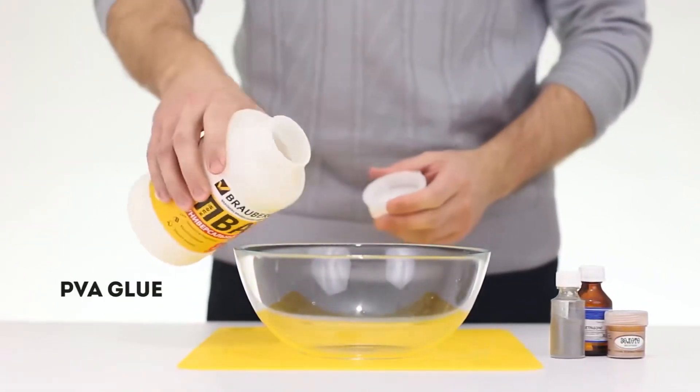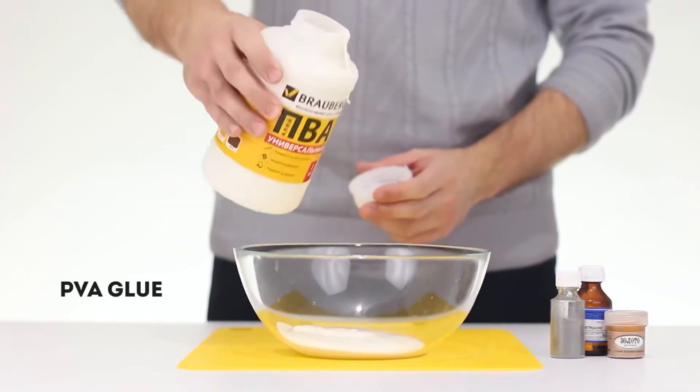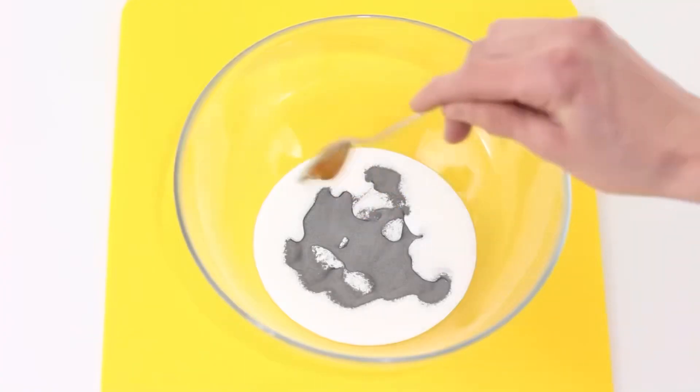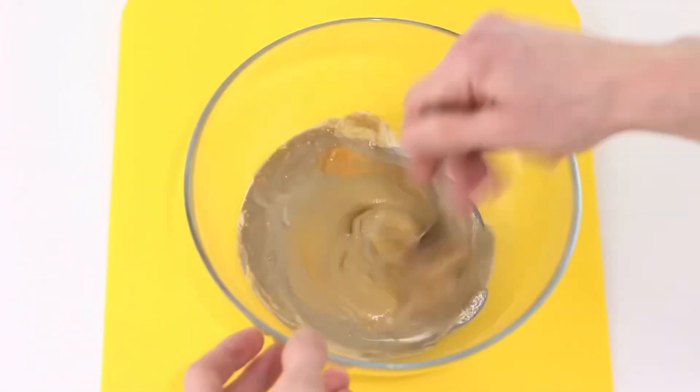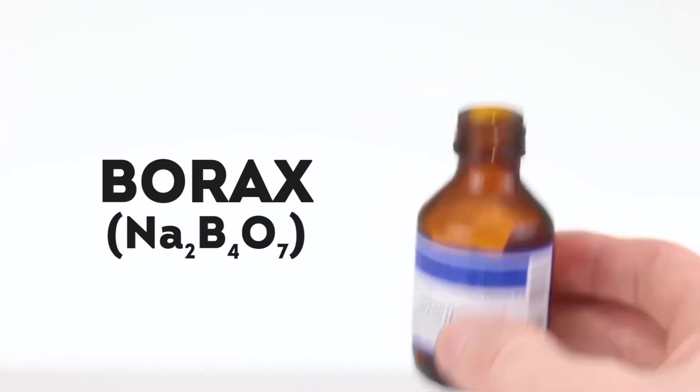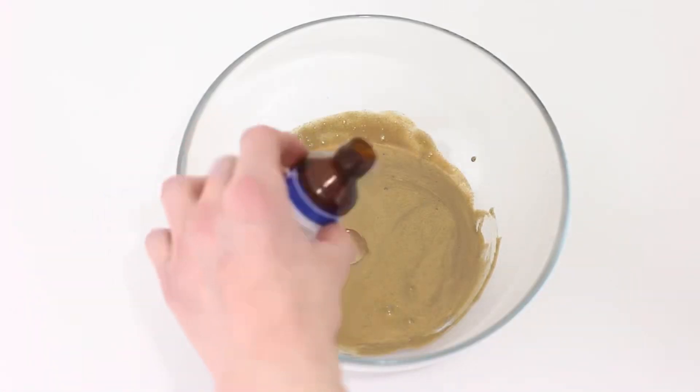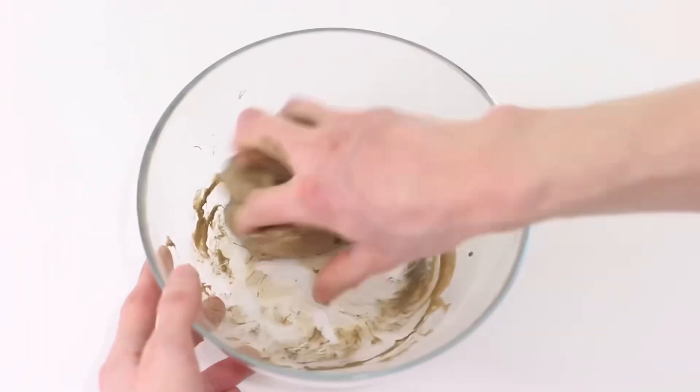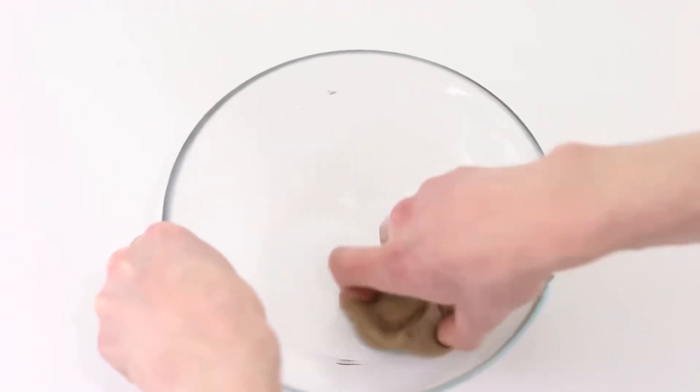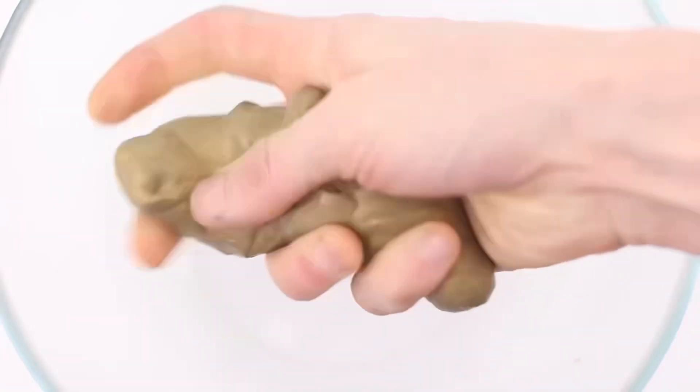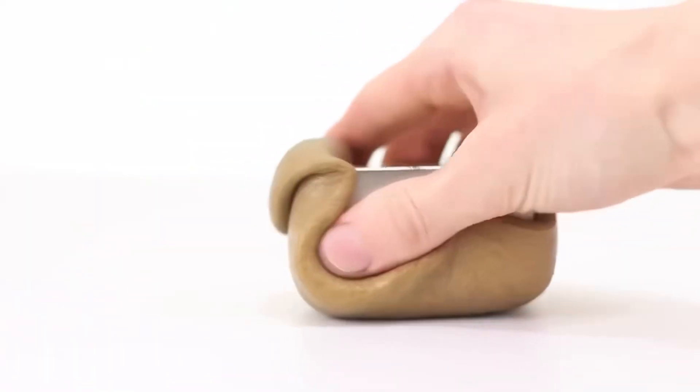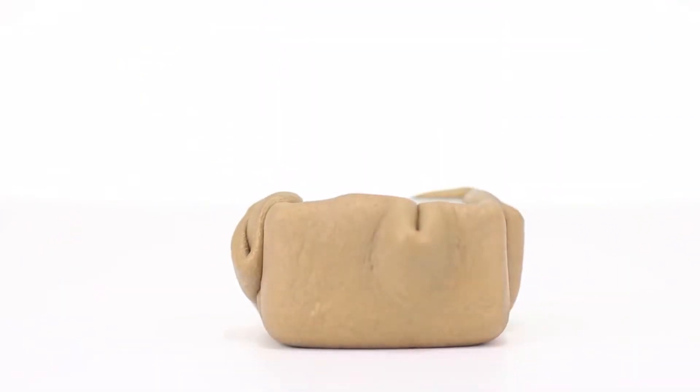Pour some PVA glue into a bowl. Add some steel spraying and bright gouache. Mix the mass until smooth. And now add sodium. And we'll mix it until the mass turns into real slime. But this is not just your ordinary slime. It's worth bringing a magnet and see what happens. Slime envelops any source of magnetism like a living slime. It's not easy to tear it off now.